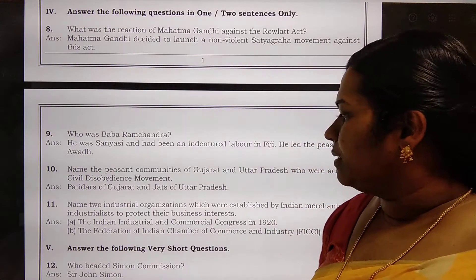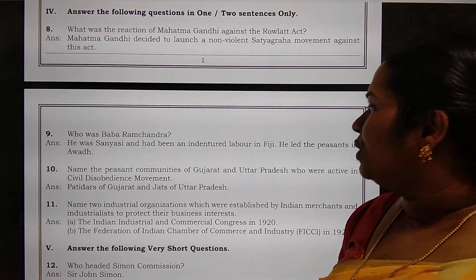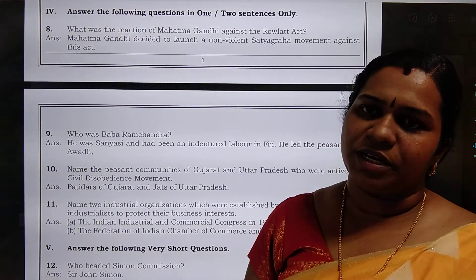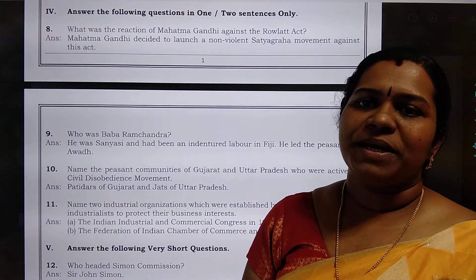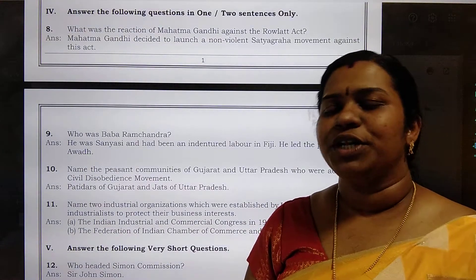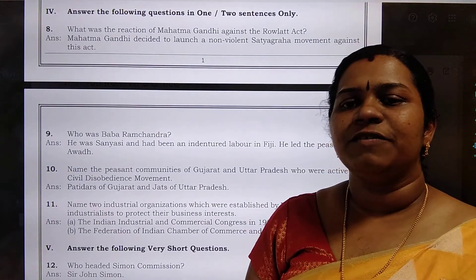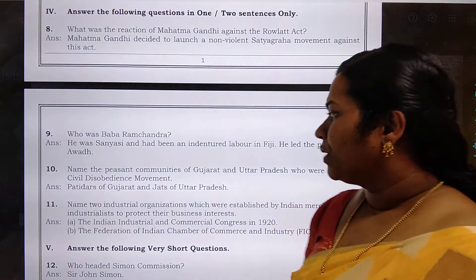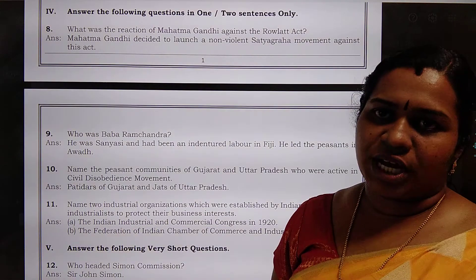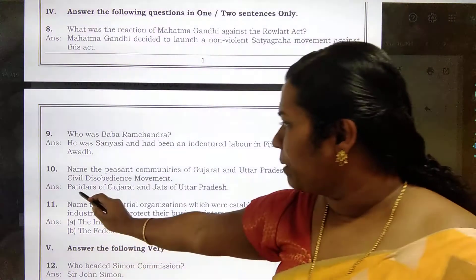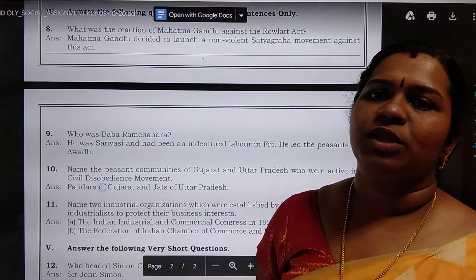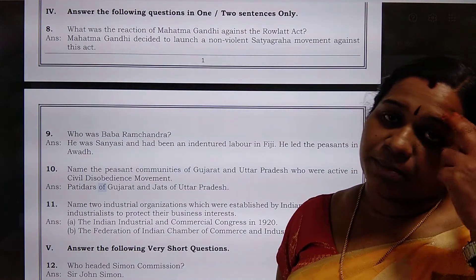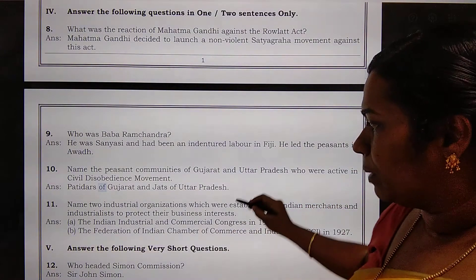Tenth question: name the peasant communities of Gujarat and Uttar Pradesh who were active in the civil disobedience movement. The rich peasant communities who were highly active were the Jats of UP and the Patidars of Gujarat. The Jats of UP and the Patidars of Gujarat were the active participants of rich peasants in the civil disobedience movement.